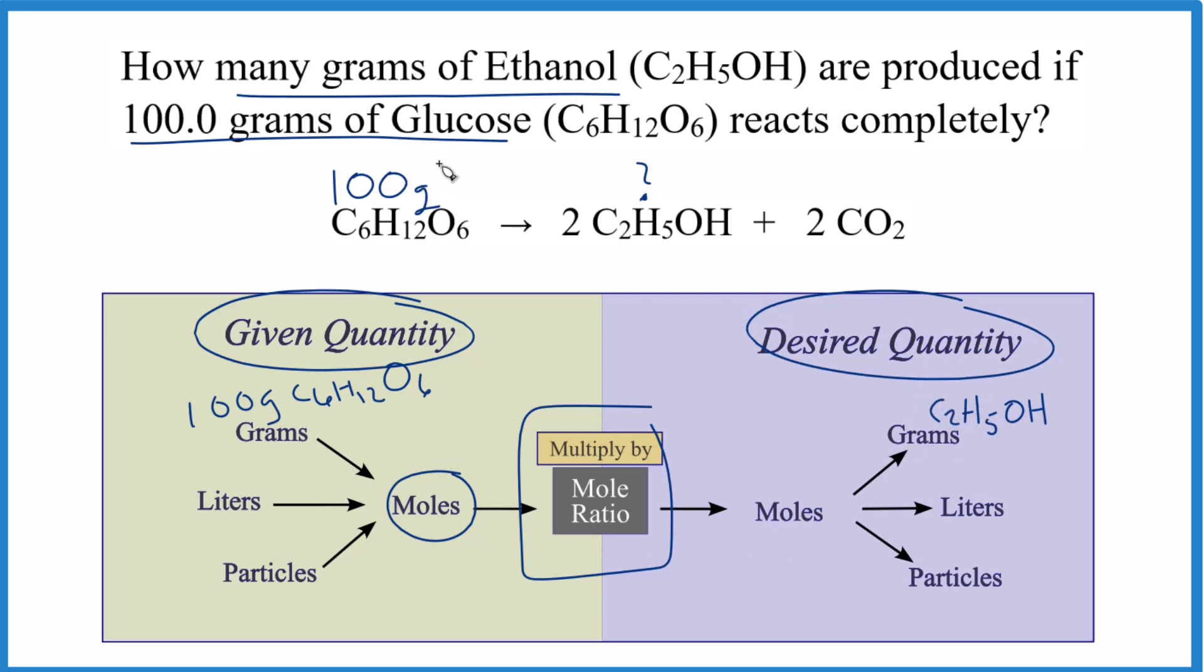Let's convert our grams to moles, use the mole ratio to get moles of ethanol, and change it back. If I convert 100 grams of glucose to moles, I'll just divide by the molar mass of glucose and I end up with 0.56 moles of glucose.